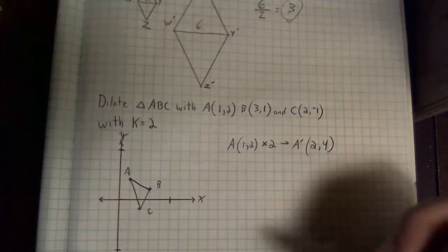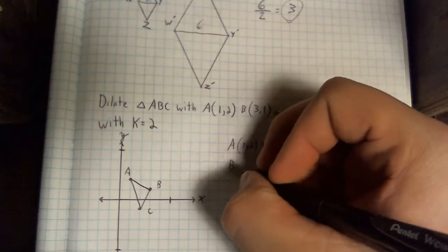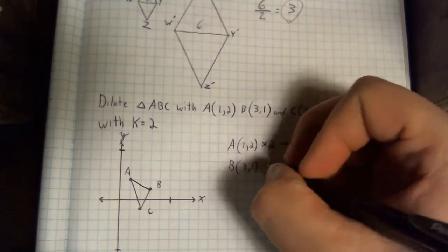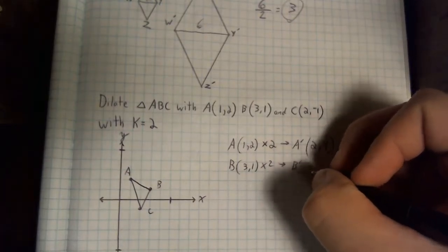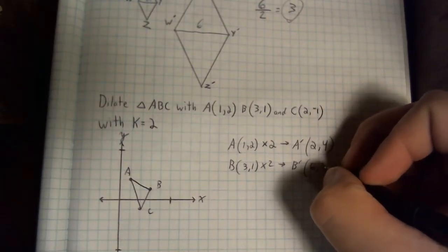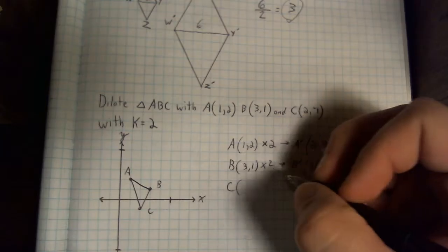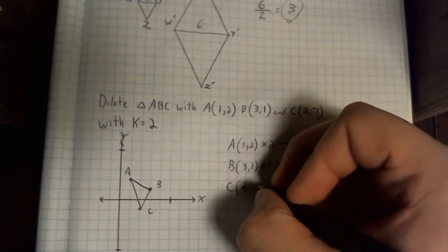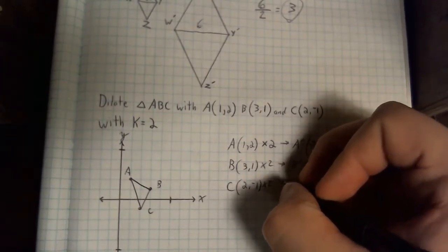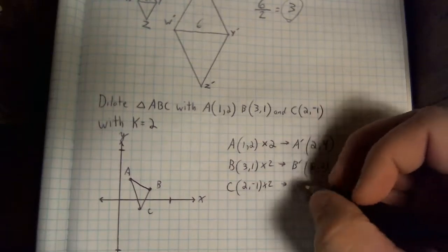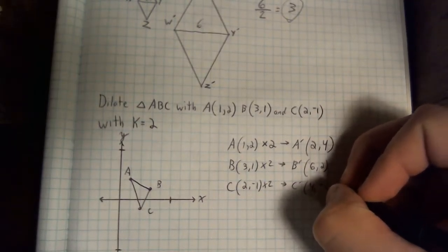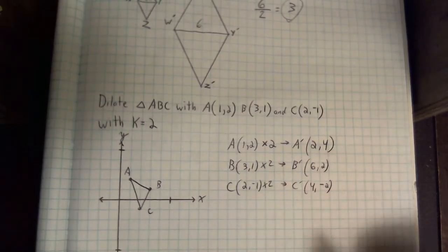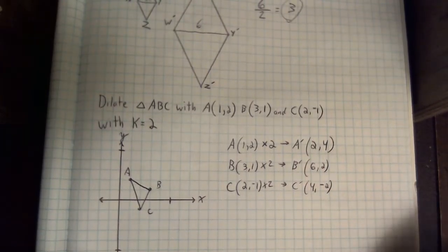Again, I'm just multiplying, giving us our result. B was at 3, 1. So B was at 3, 1, multiplying by a scale factor of 2. That's going to give me 6, 2. C was at 2, negative 1. C was at 2, negative 1, multiplying by the scale factor of 2. That's going to give me 4, negative 2. Don't forget any signs that they have in there, we want to include them.